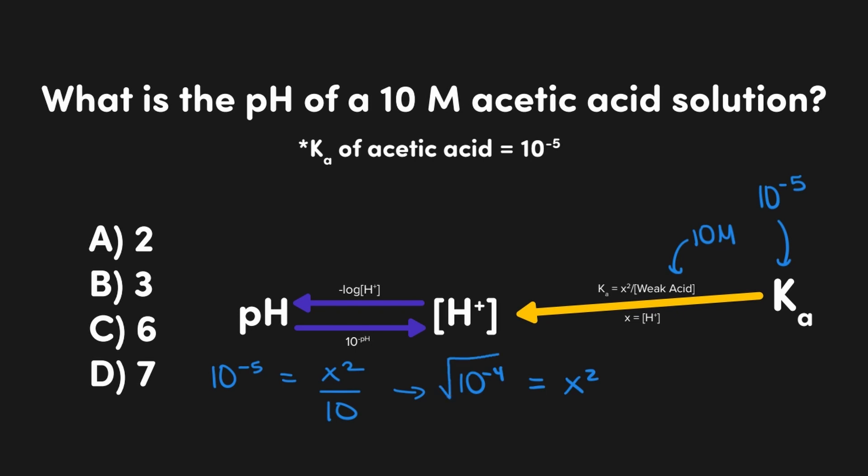We'll take the square root of both sides and that will be equal to x. To take the square root of something with an exponent, you need to make sure that it's divisible by 2 and in this case 10 to the negative 4 is. Now go ahead and halve that exponent and that's going to be the square root of 10 to the negative 4, which would end up being 10 to the negative 2.